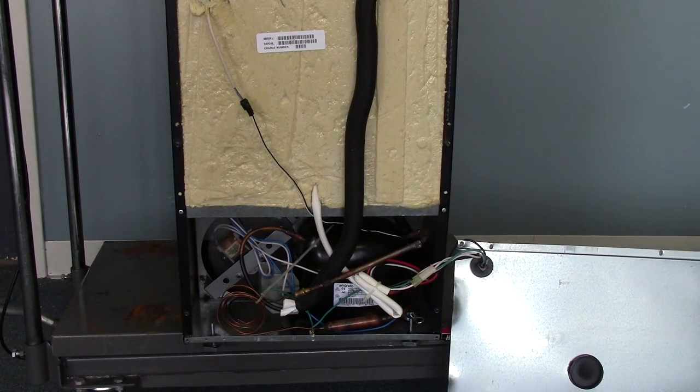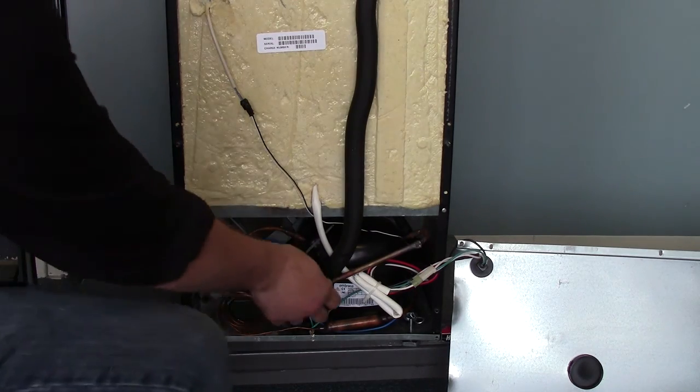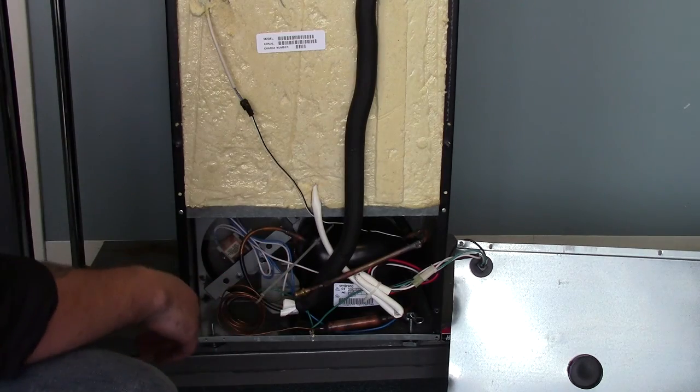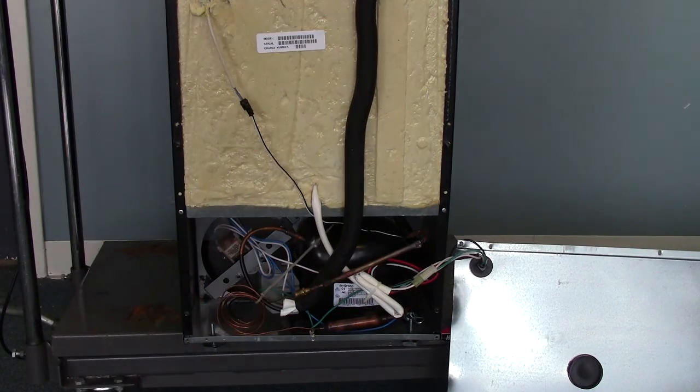And now we can see the compressor area where we're going to have to add the Freon. This one actually already has a service valve welded on, so it looks like they've had problems in the past with the Freon leak. So let's see how low the Freon is on it.